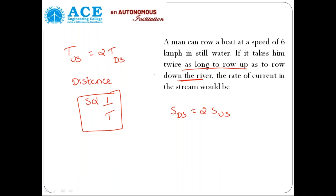Upstream means against the stream — maybe against the wind flow. You are moving along with the stream means downstream, along with the wind. Upstream means against the wind you are traveling. Downstream is along with the wind. When you go downstream your speed will be more; when you go upstream your speed will be less. That's a basic point.